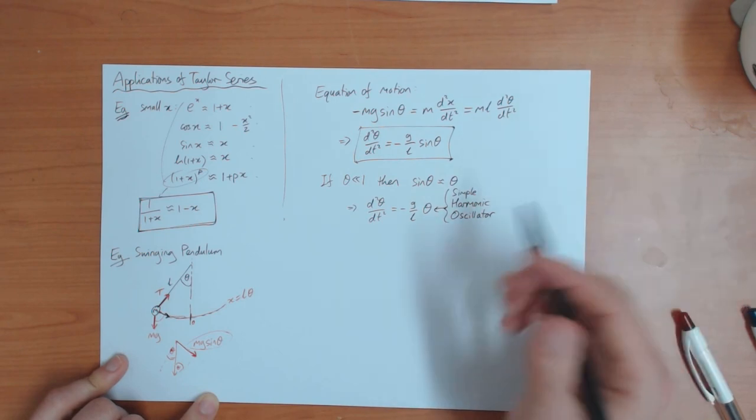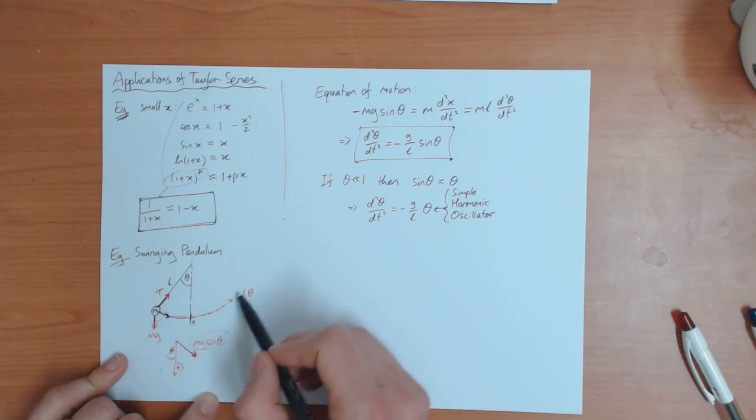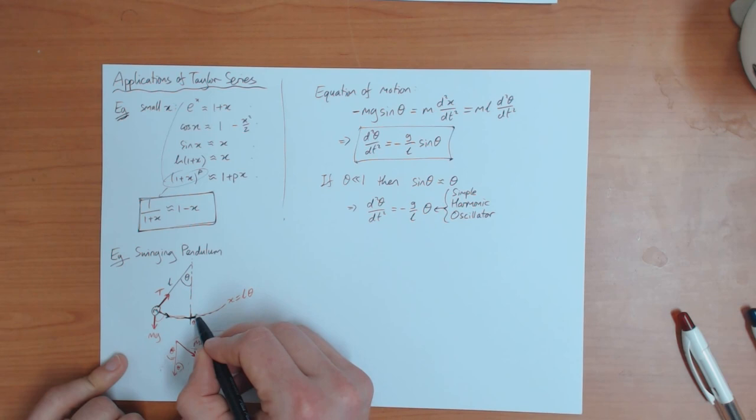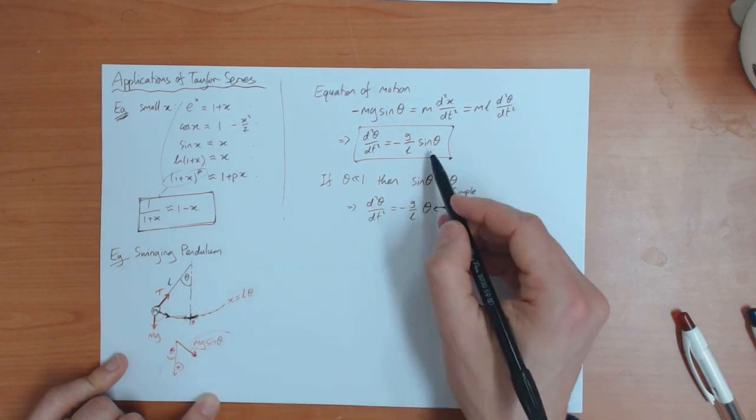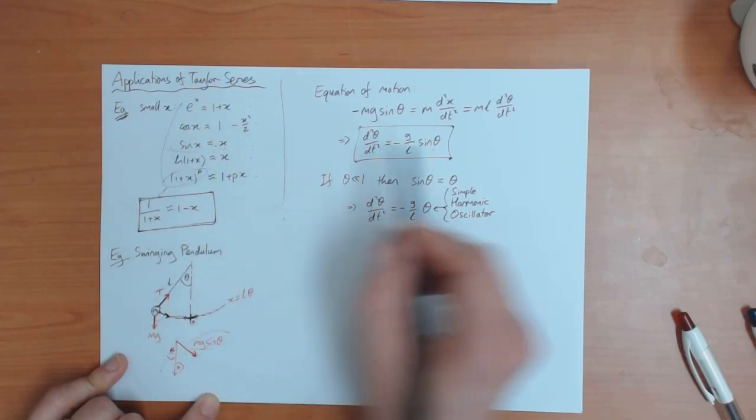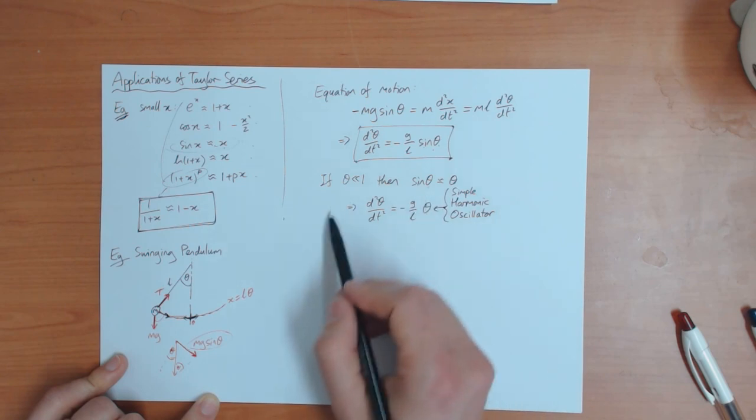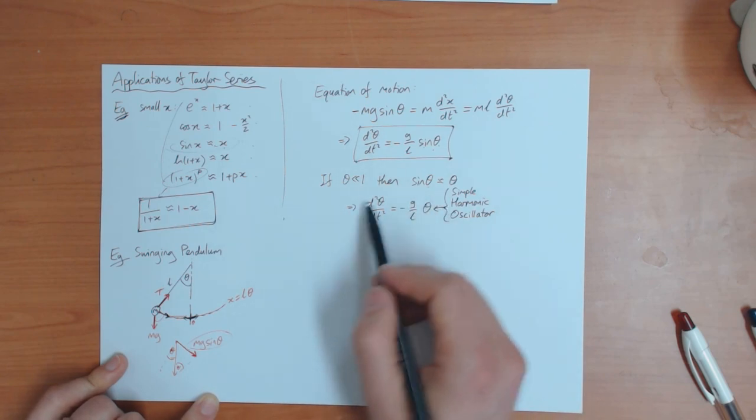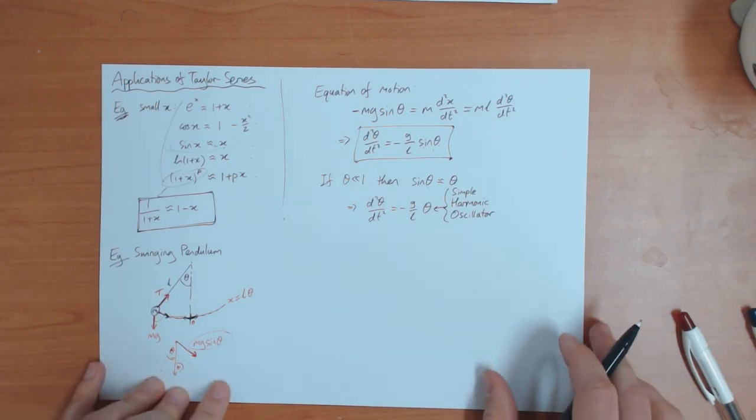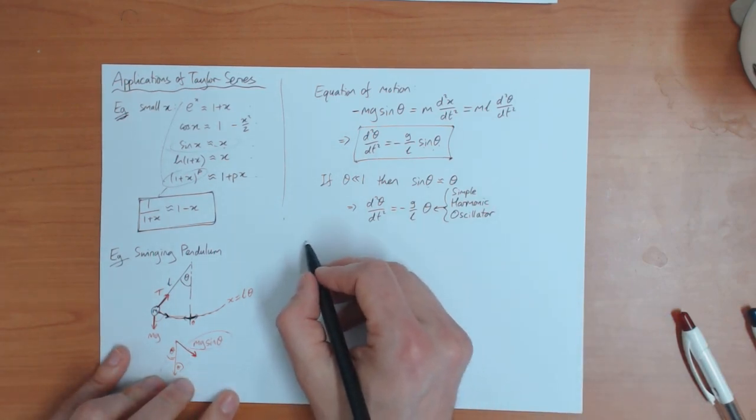Which, if you take an introductory mechanics class, you will definitely solve this equation. So the exact equation for the swinging pendulum is difficult. That's this one. Difficult to solve. But if you know that the pendulum is only swinging gently, so the angle here is small, then you can use a Taylor series. So I'm using this approximation, right? Sine x is approximately x. So sine theta is approximately theta. So with this approximation, you get an equation which you can solve, which is the simple harmonic oscillator. So that's an example of the use in physics.